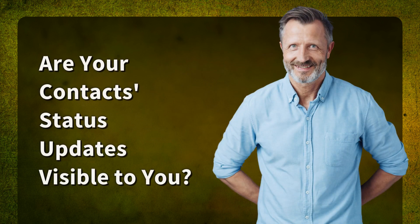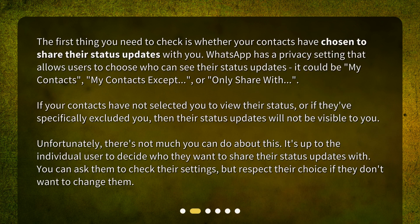Are your contact status updates visible to you? The first thing you need to check is whether your contacts have chosen to share their status updates with you. WhatsApp has a privacy setting that allows users to choose who can see their status updates — it could be 'My Contacts', 'My Contacts Except', or 'Only Share With'. If your contacts have not selected you to view their status, or if they've specifically excluded you, then their status updates will not be visible to you.